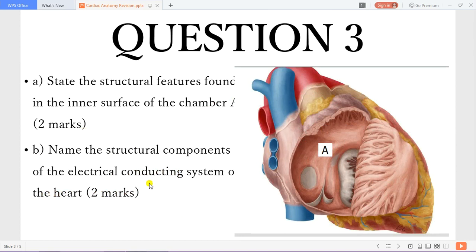You can appreciate that this is the right atrium and the features here include the fossa ovalis with the limbus of the fossa ovalis, and the musculi pectinati which gives you the rough part of the right atrium.